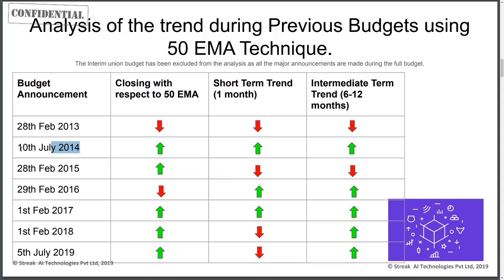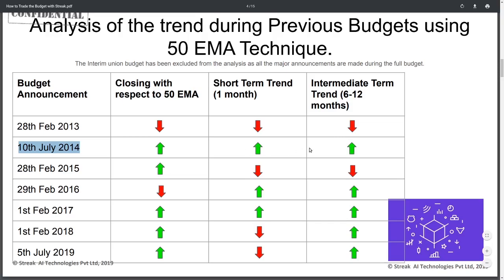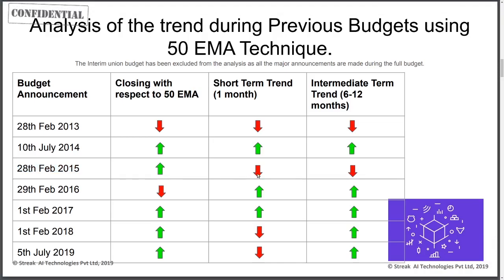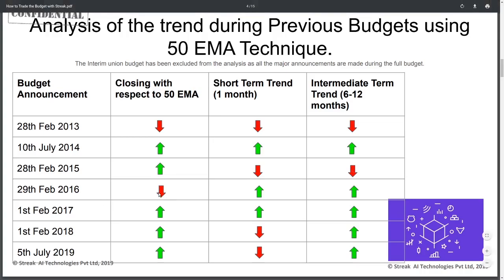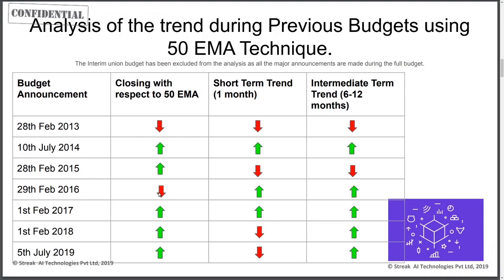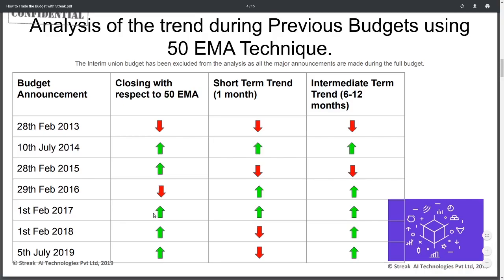Looking at this table — only three out of seven times the trend on the budget day was continued for the short term. In 2014, the day close was bullish and the short-term trend was bullish. In 2013, the day trend was bearish and the short-term trend was bearish. In 2017, the day close was bullish and the short-term trend was also bullish. Five out of seven times, the budget day trend was continued for the long-term or intermediate-term trend, meaning the day trend and the intermediate trend matched in most cases.